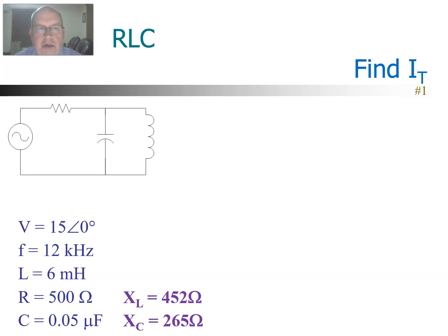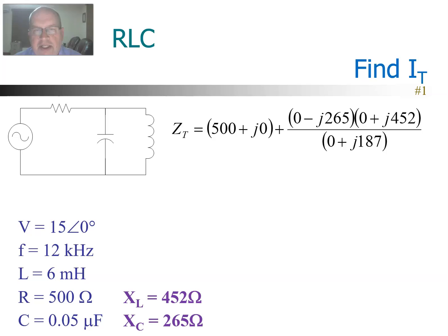When we do total Z, notice we have the resistor in series, and then we have two parallel branches. So the resistor will be added to the parallel branches, which we'll do with product over sum. Since it's just two branches we can use product over sum. We'll write the resistor as 500 + j0, since the resistor is all real.